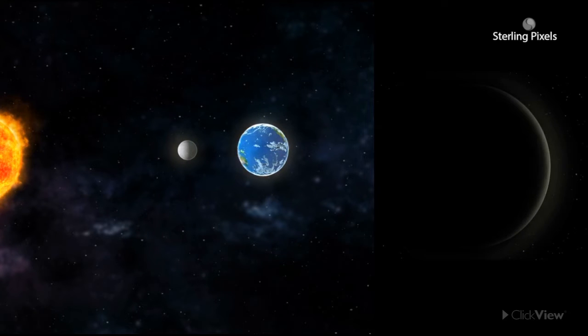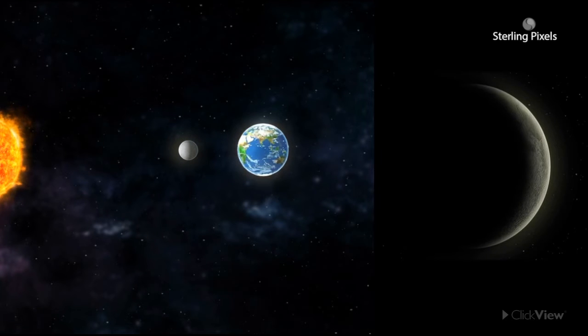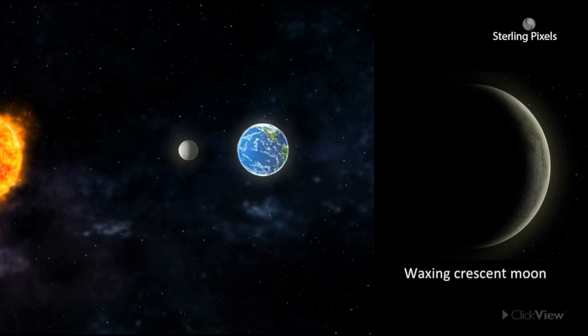As the moon moves away from the sun in the sky, we see a bit more of the sunlit side of the moon each night. A few days after the new moon, we see a thin crescent in the sky.